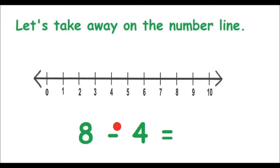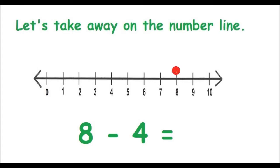Therefore, we must start using number 8. So we will start at number 8 on the number line. Our problem tells us to take away 4. So from 8, we will make 4 jumps backwards to take away.